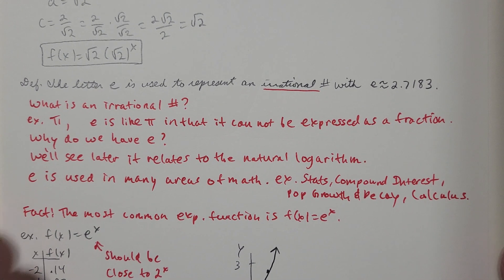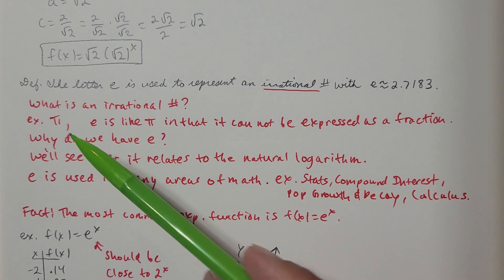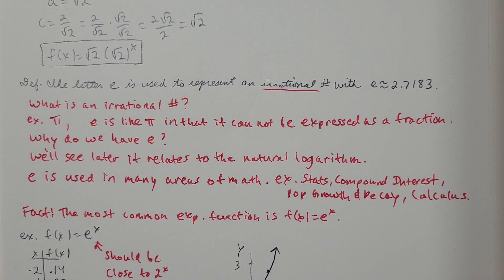Now the next thing that we're going to have to know is we're going to have to be familiar with the letter e. The number e is used to represent an irrational number with a decimal approximation. E is approximately 2.7183. It goes on forever. What is an irrational number? Well, an irrational number is one that cannot be written as a fraction. So like pi is an irrational number. There's no way you can write pi as a fraction. The square root of 2. That would also be an irrational number. There's no way to write the square root of 2 as a fraction.